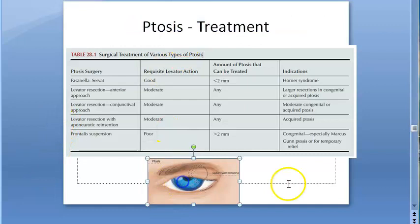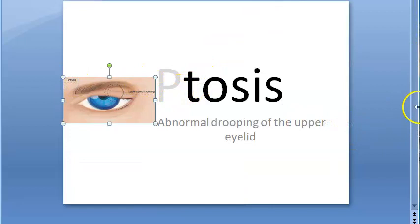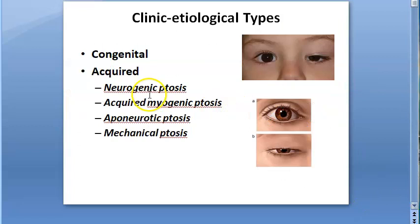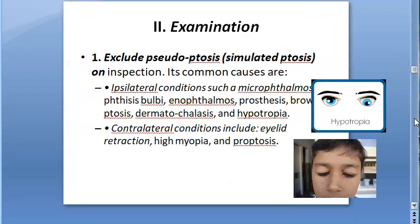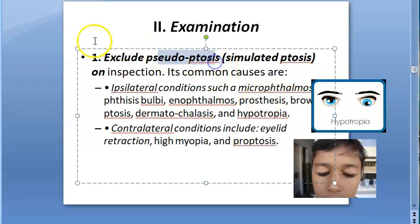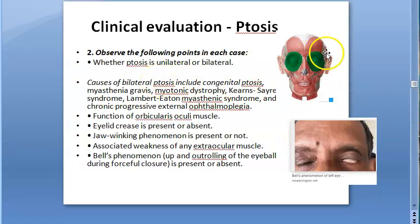Hello, in this video we want to look at ptosis treatment. Till now we have seen what ptosis is — abnormal drooping of the upper eyelid — and what the causes are: congenital, acquired, neurogenic, myogenic, aponeurotic, mechanical. Then we saw how to do clinical evaluation, taking history and finding out if it is real ptosis or pseudoptosis. The actual causes involve levator palpebrae superioris and Muller muscle.